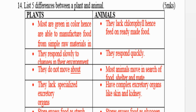Welcome back. We have question number 14: List five differences between a plant and an animal. On one side you have plants, on the other side animals. Difference number one: most plants are green in color and are able to manufacture food from simple raw materials, while animals lack this and feed on ready-made food.